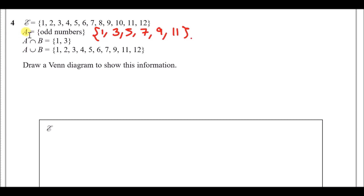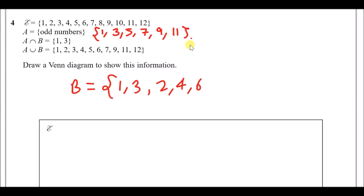A intersect B tells us that only 1 and 3 are in common, so Set B must contain at least 1 and 3. A union B tells us all numbers collected together — looking at what's in B but not in A, we find B also contains: 2, 4, 6, and 12.